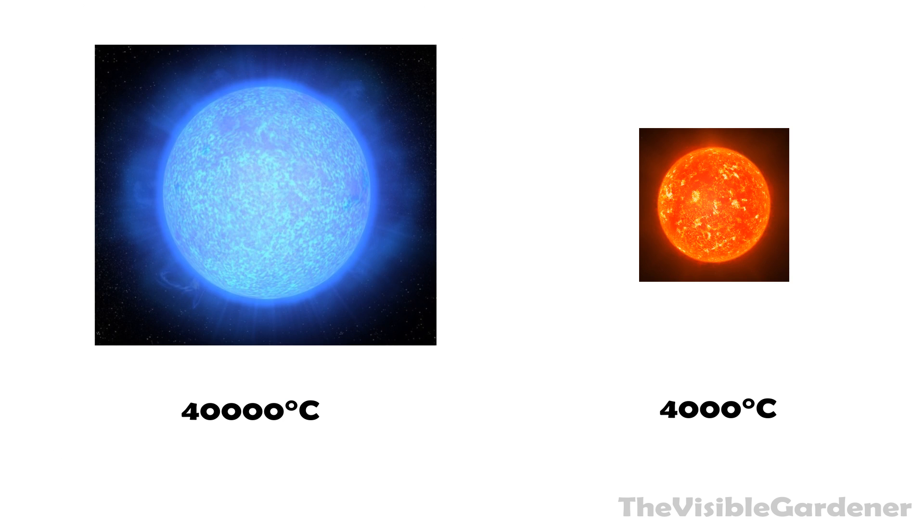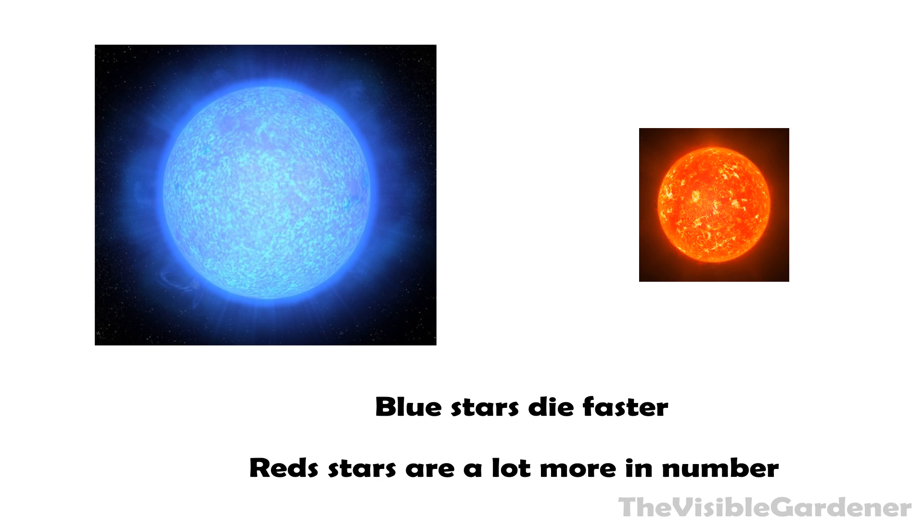The blue stars are about 10 times hotter than red stars and 100 times bigger. But don't worry, team red—blue doesn't get more of everything. Because blue stars use more hydrogen, they also die out faster and there are also way fewer of them. I guess there is a plus side of being small.